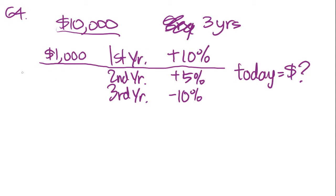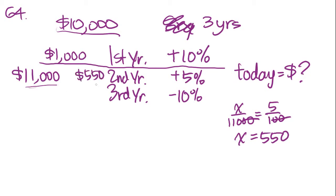Second year added another 5%, so let's find out what 5% of this amount is. Set up a ratio: X over 11,000 equals 5 over 100. Lose the zeros and we get 5 times 110. X equals 550. So 5% of this amount is $550, so they added another $550. At the end of the second year, we have $11,550.